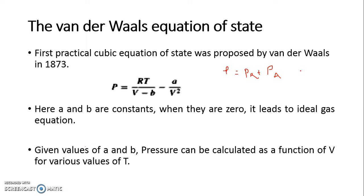Van der Waals proposed P = RT/(V - b) - a/V². The Van der Waals equation can be considered a semi-empirical equation. The reason is it has a theory behind it which says P equals Pr plus Pa. However, the mathematical terms used to express the relation between P, T, and V are mainly empirical in nature, based on the understanding of the process.